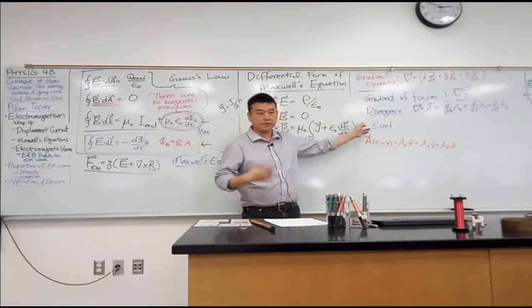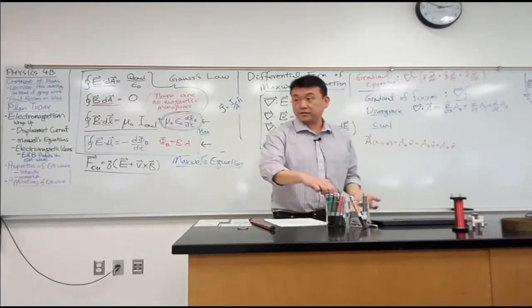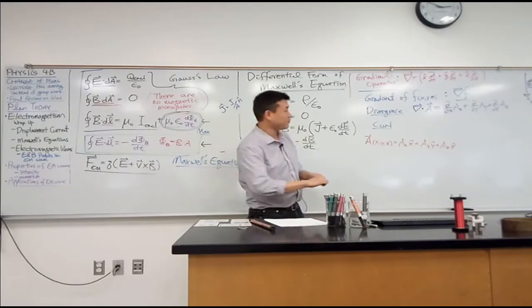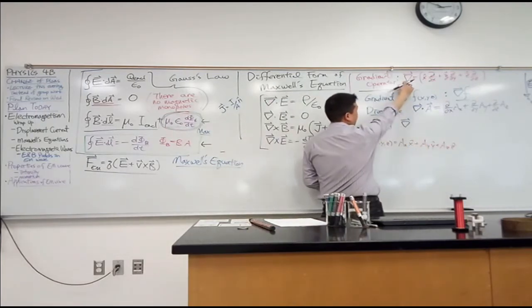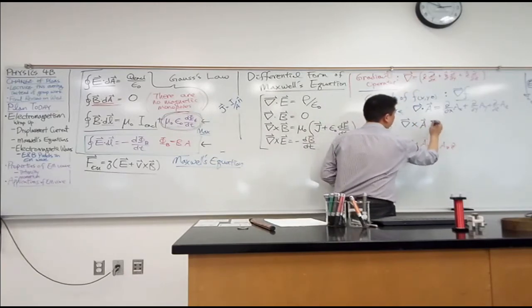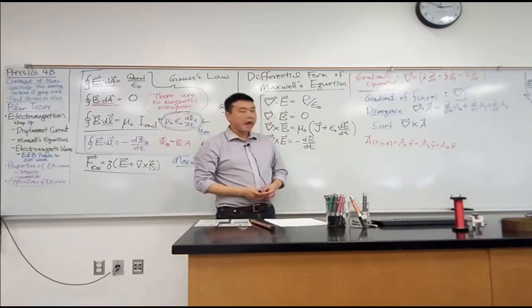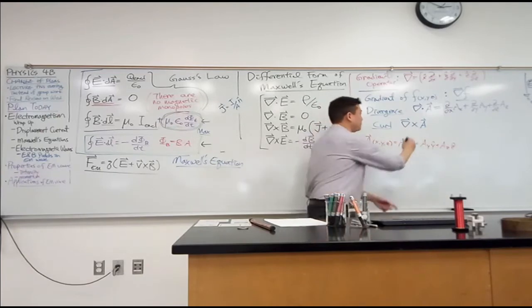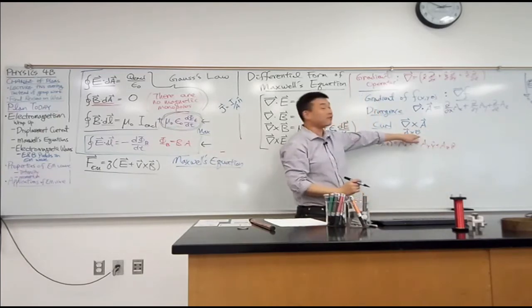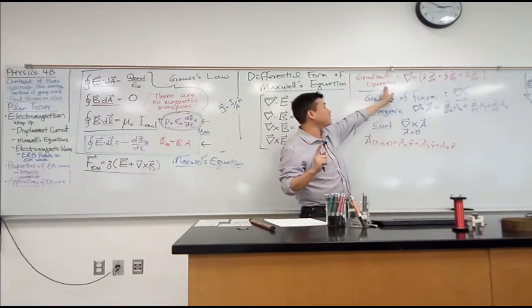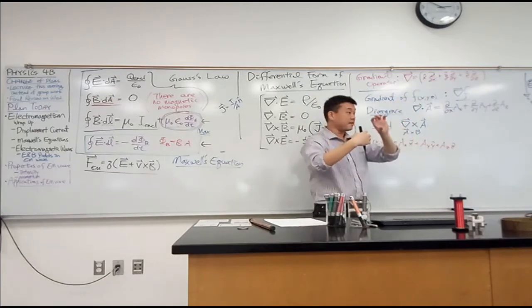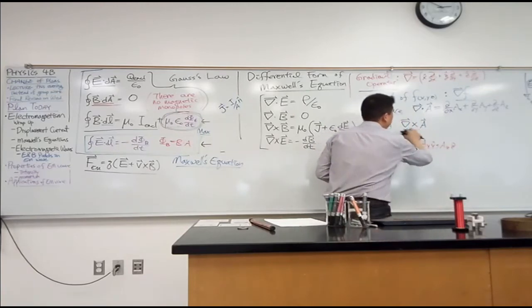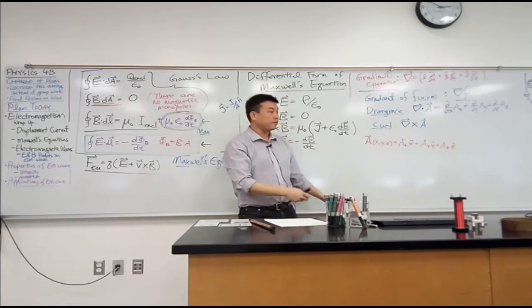Curl is the quantity that gives you a vector back. The product that gave you a vector back was cross product. So curl is going to look like this: the gradient vector operator cross product with the vector field. The one thing to be careful about is the order of operations — you can't swap the gradient operator and the vector field, because operators must come right in front of what they act on.